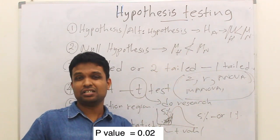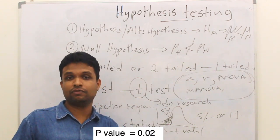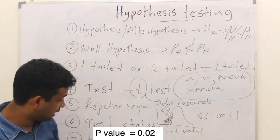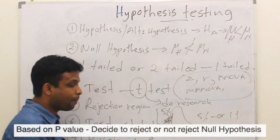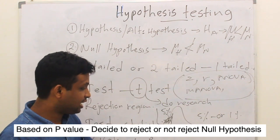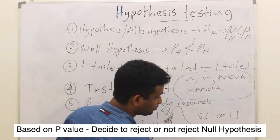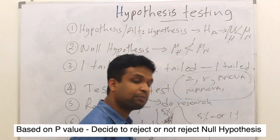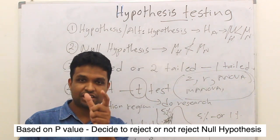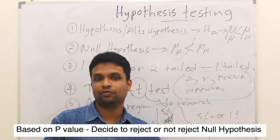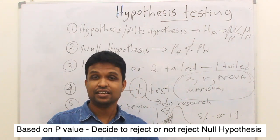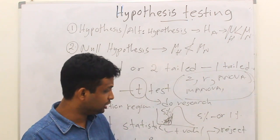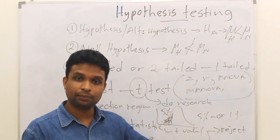Even though only 2% of normal birth weights fall below that value, which is very small, we consider that as abnormal. You will get a p-value, and based on the p-value, you decide whether to reject the null hypothesis or accept the null hypothesis. In general, we don't say we accept the null hypothesis — instead, we state there is no evidence to reject the null hypothesis.